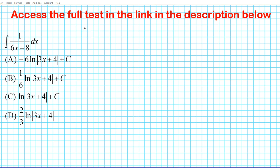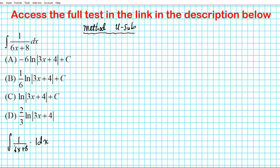Method one is the U-substitution method. You might wonder how do you know that U-substitution is applicable here. If you take a look at an integral you can break it up into two functions. In this problem you can write it as one over (six X plus eight) times one DX. You ask yourself: if the derivative of the inner function is a multiple of the other function, then you can use U-substitution. The inner function is six X plus eight — differentiating gives six DX, and six DX is a multiple of one DX, so U-substitution applies.